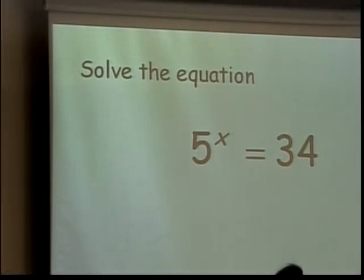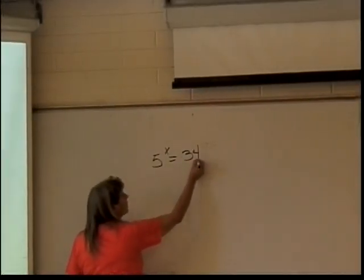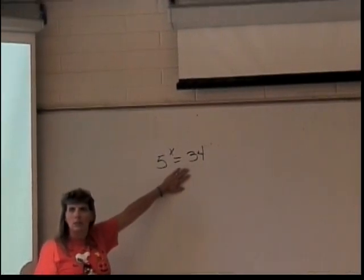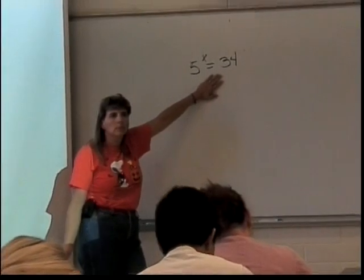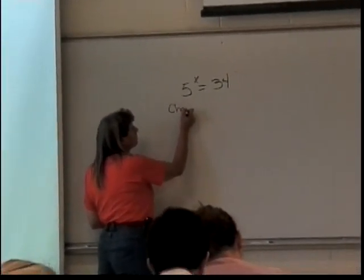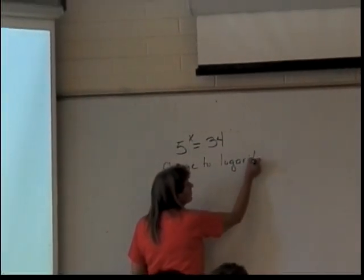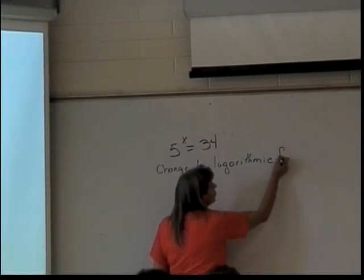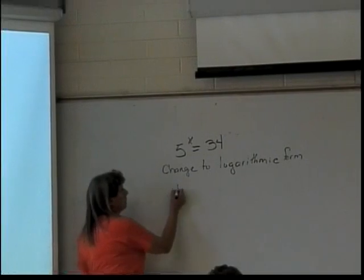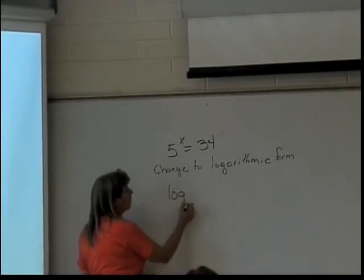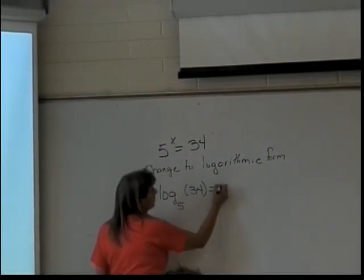So let's start with this problem. 5 to the x equals 34. What kind of equation is this? Exponential. So what form should I change to? Change to logarithmic form. So what will it be when I change it? Log what? Log base 5 of 34 equals x.